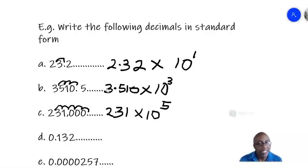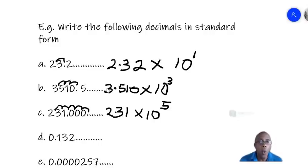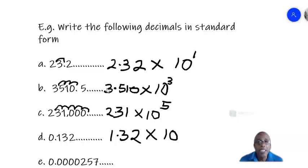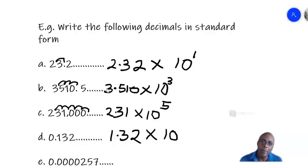Now look at example d: 0.132, which is a number less than one. In order to get a number between one and ten, you must bring the point forward one place to get 1.32. To get 0.132 back, you must bring the point backwards one place, which means times 10 to the negative one, or divided by 10. So 0.132 in standard form is 1.32 times 10 to the negative one. Note the difference: numbers less than one give negative exponents, while numbers greater than 10 give positive exponents.